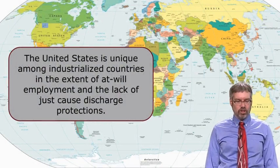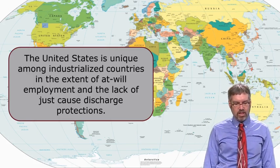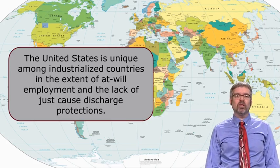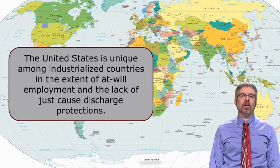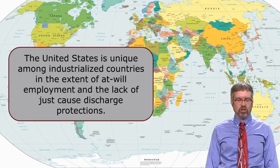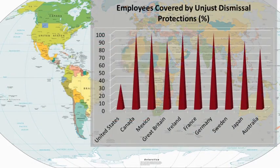First, unjust dismissal. This is probably the single biggest difference between the United States and the rest of the world. The United States is unique among industrialized countries in the extent of at-will employment and the lack of just cause dismissal protections. I showed you this graph in a previous video, but I want to bring it up here again to really reinforce the extent to which the U.S. stands alone for its lack of employees covered by unjust dismissal protections.